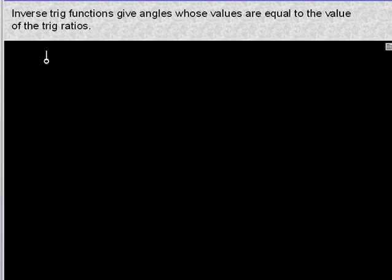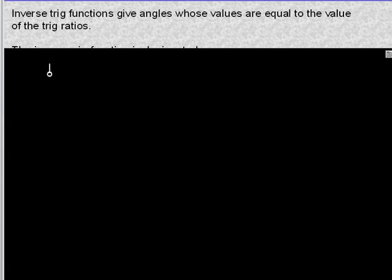Inverse trig functions give angles whose values are equal to the value of the trig ratios. The return value from an inverse trig function is an angle. What you put into it — the input parameter — is the ratio.